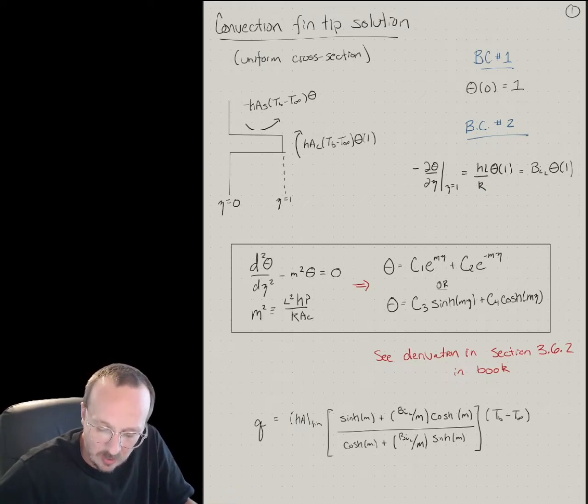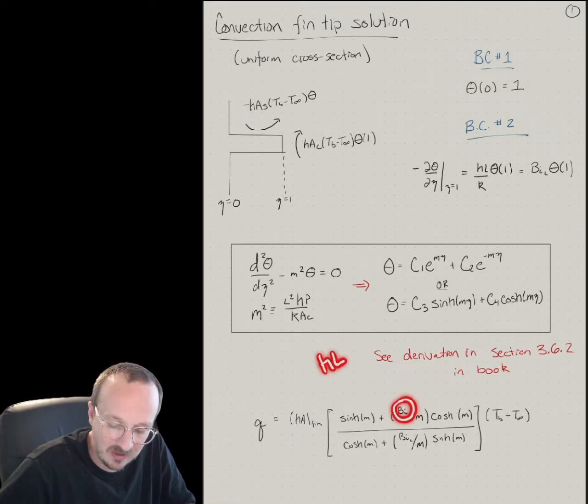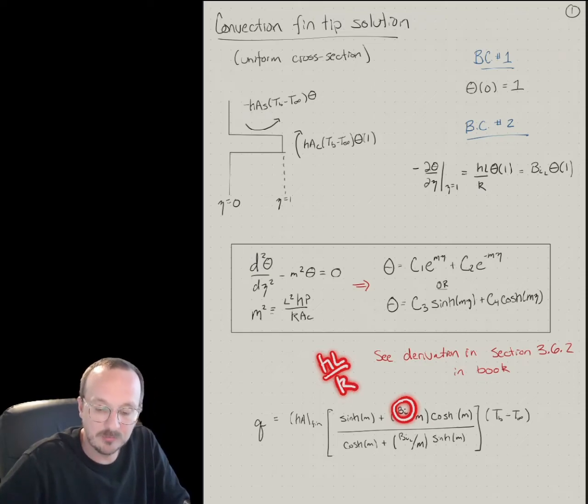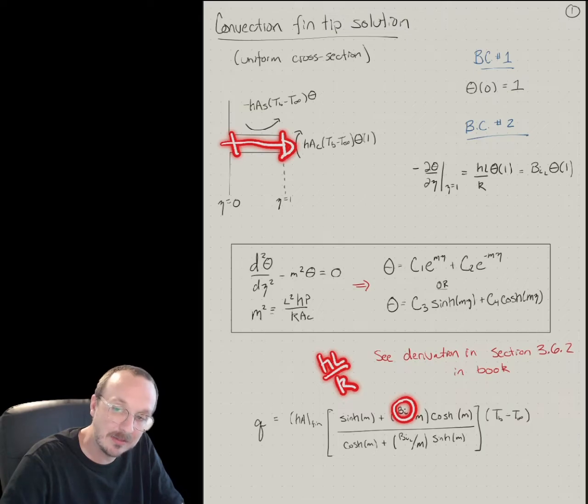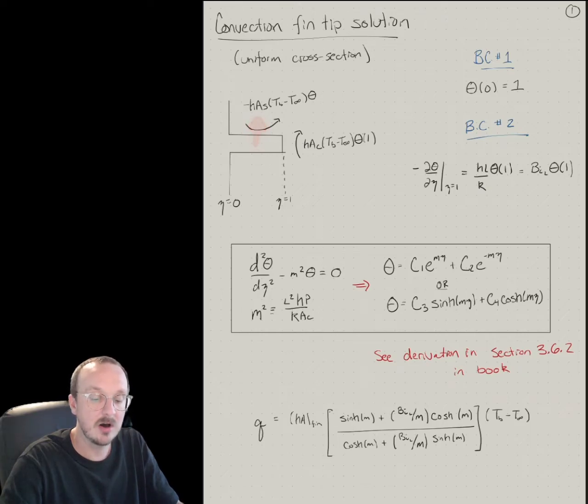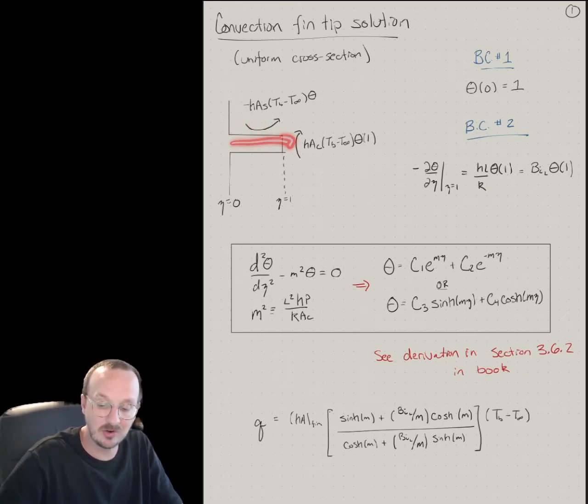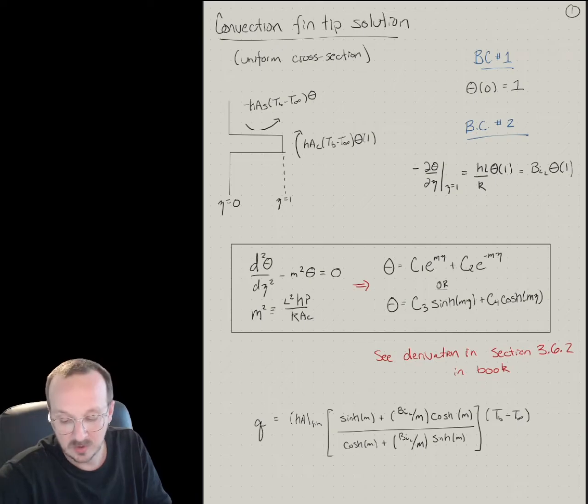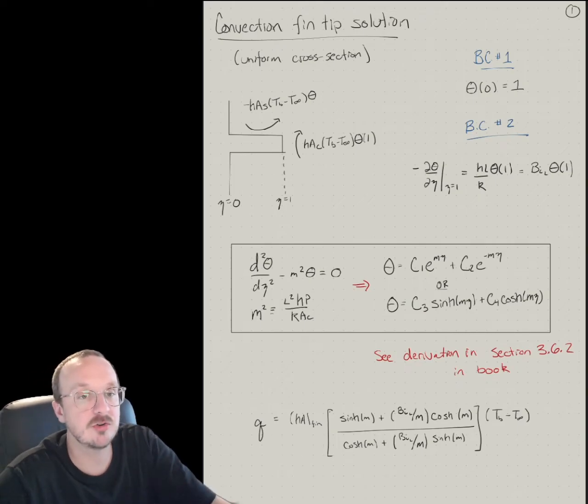So this is the heat transfer rate you can solve following the same techniques we did before. And now I've got this BO number, which is HL over K. But of course, we're talking about the Biot number subscript L, so it's relative to the length of the fin.